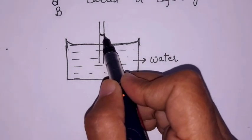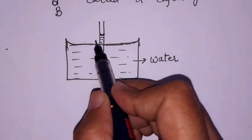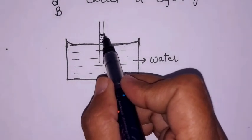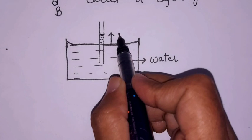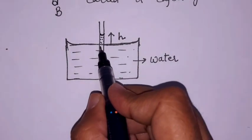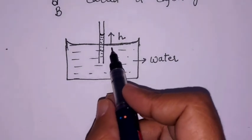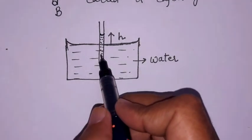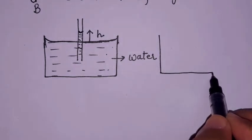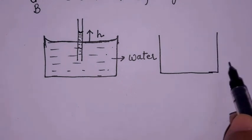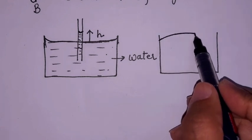When a capillary tube is dipped in water, the water rises and maintains a certain height. In the second example, mercury-type liquids do not wet the glass surface and the free liquid surface is convex.